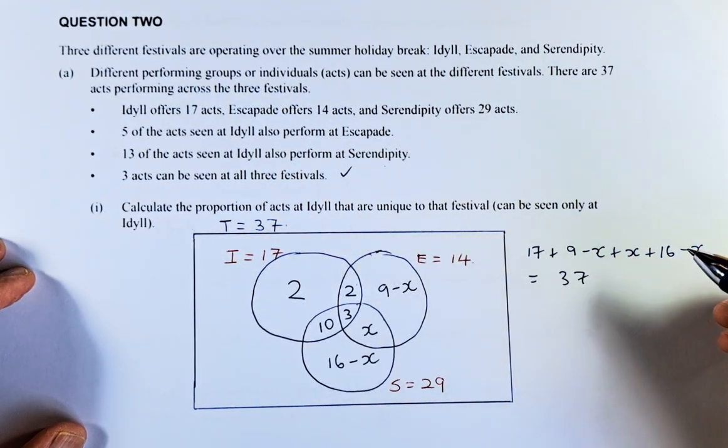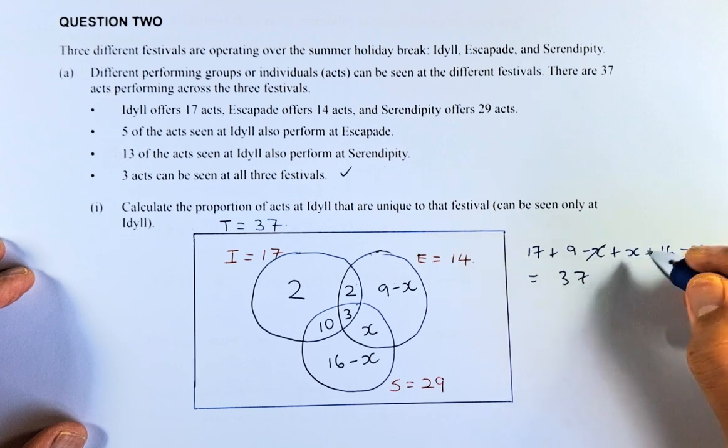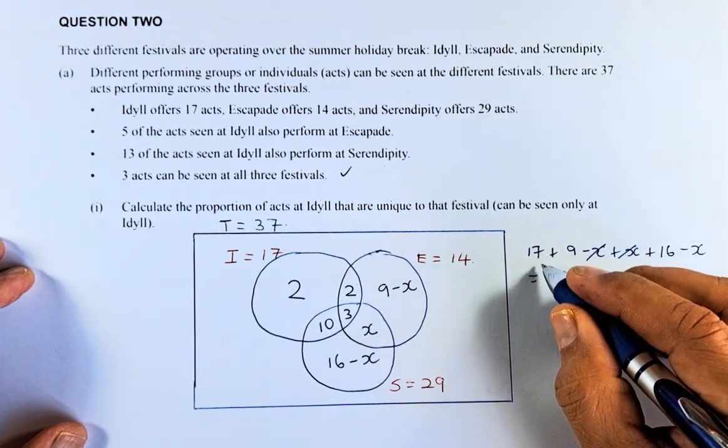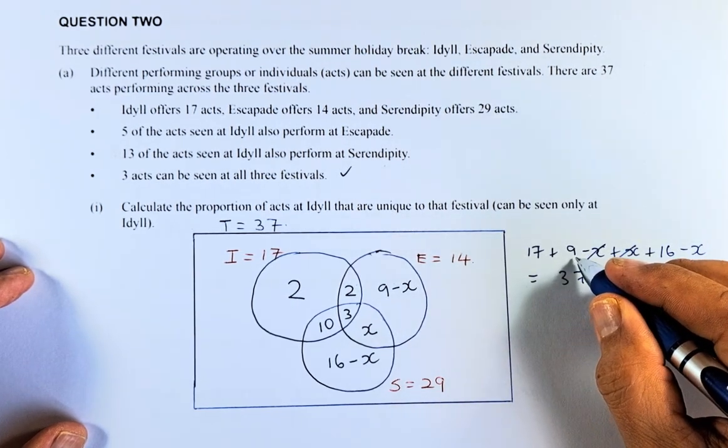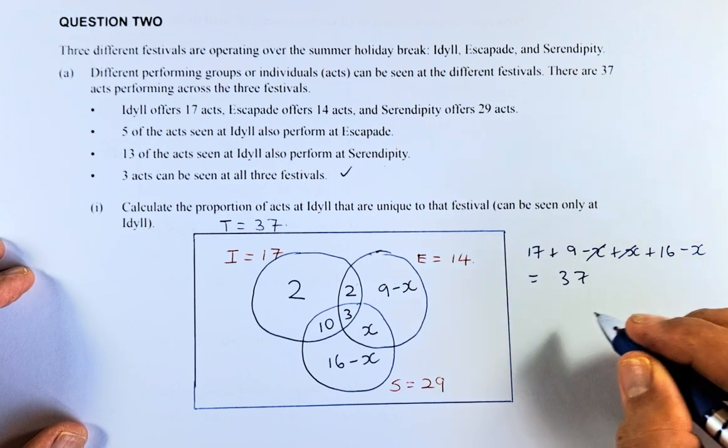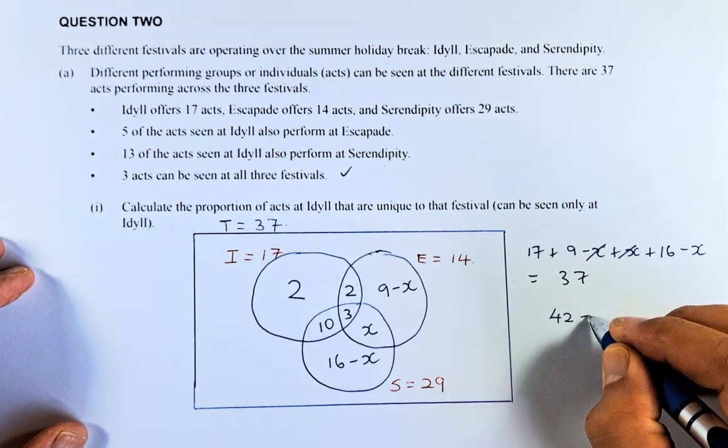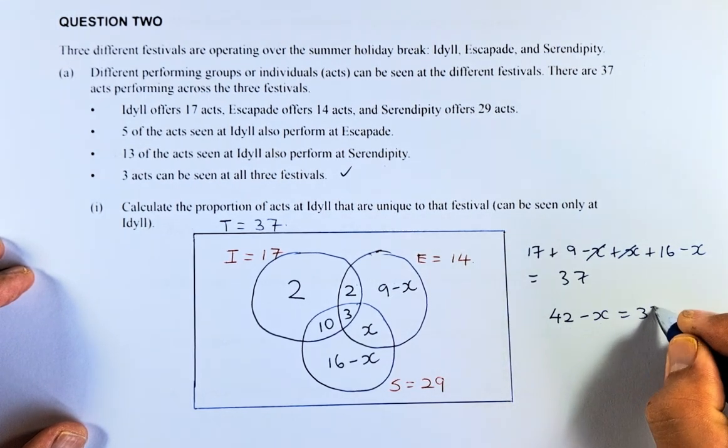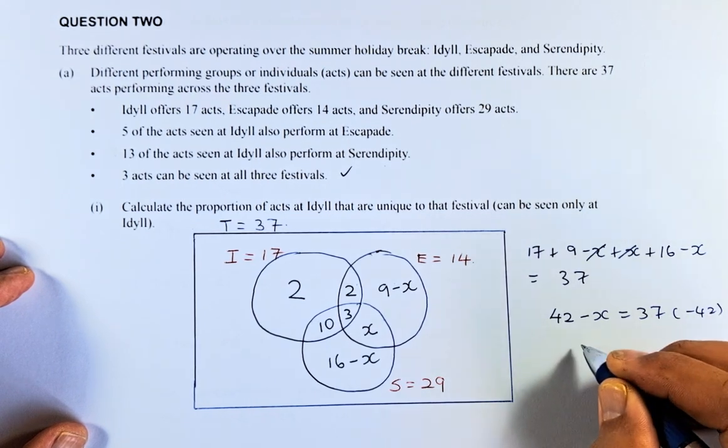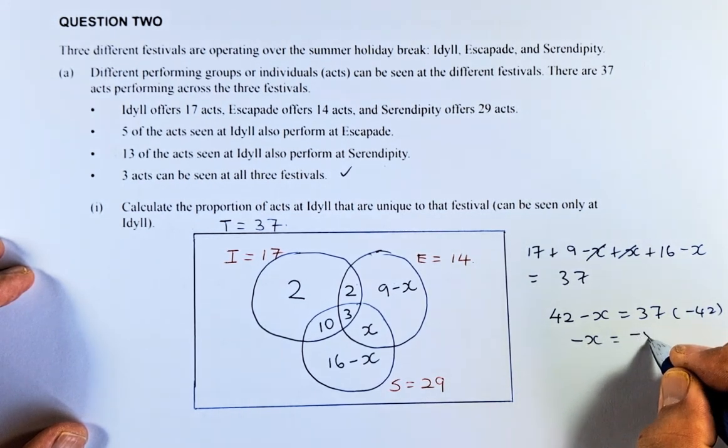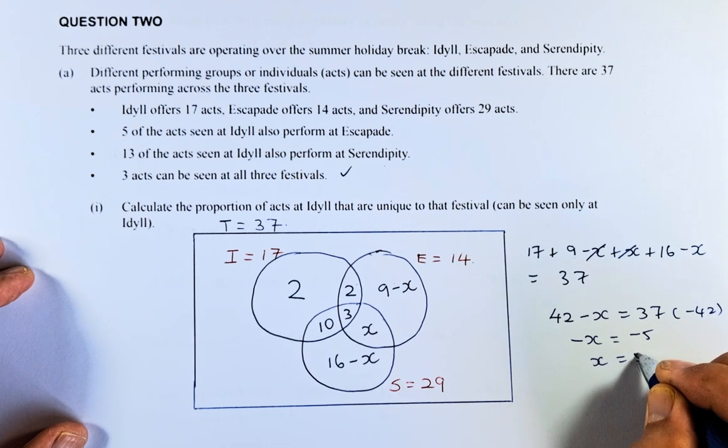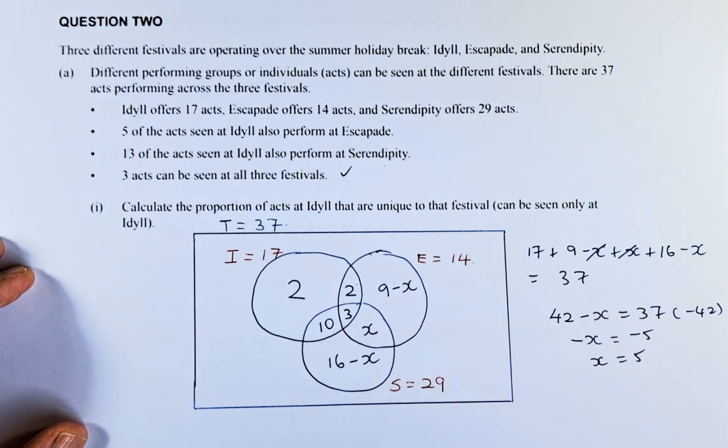Now we do some algebra. We cancel some of the terms. Minus X and X are going to cancel. So 17 plus 9 is 26, 26 plus 16 is 42 minus X equals to 37. You minus 42 on both sides. So minus X equals to minus 5. So X equals to 5.